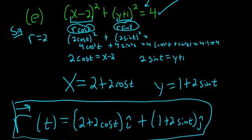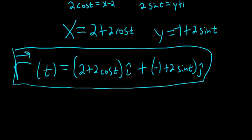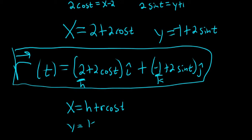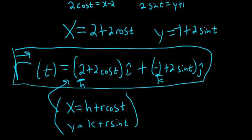Notice the center is (2, negative 1), which appears directly in the result. So in general, a formula for a circle centered at (h, k) with radius r gives parametric equations: x equals h plus r cosine t and y equals k plus r sine t. These always give you the parametric equations for such a circle, which you can then convert to a vector-valued function. I hope this video has been helpful!